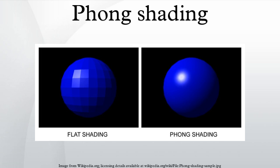Since specular highlights are absent from the polygon's vertices and Gouraud shading interpolates based on the vertex colors, the specular highlight will be missing from the polygon's interior. This problem is fixed by Phong shading. Unlike Gouraud shading, which interpolates colors across polygons, in Phong shading a normal vector is linearly interpolated across the surface of the polygon from the polygon's vertex normals. The surface normal is interpolated and normalized at each pixel and then used in a reflection model, for example the Phong Reflection Model, to obtain the final pixel color.